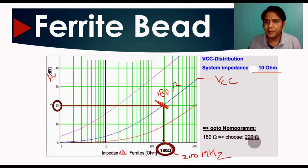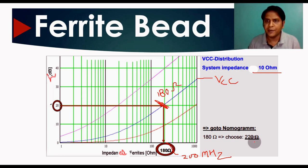So to get 20 dB attenuation at 200 MHz, hope you now understand how to select a ferrite bead, its application, what radiated emission is, what the insertion loss model is, and how to calculate the required ferrite bead impedance.